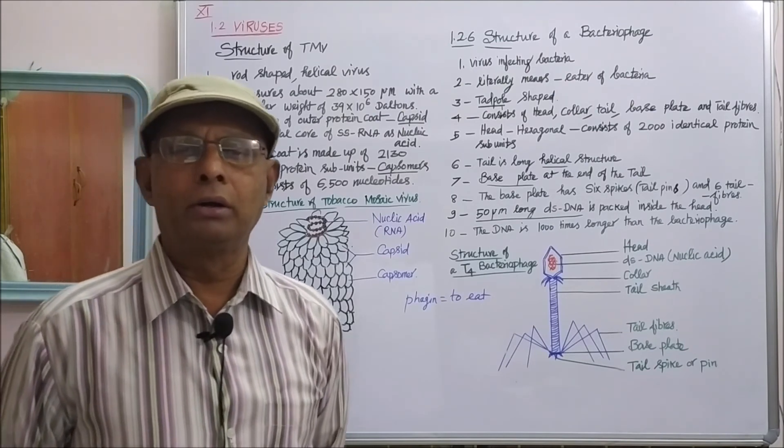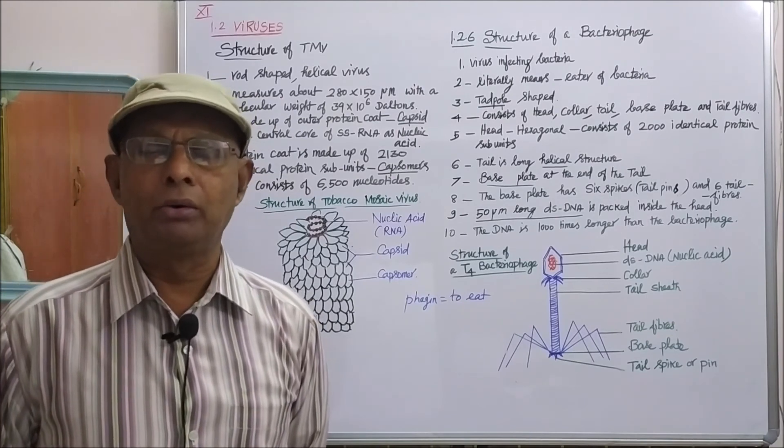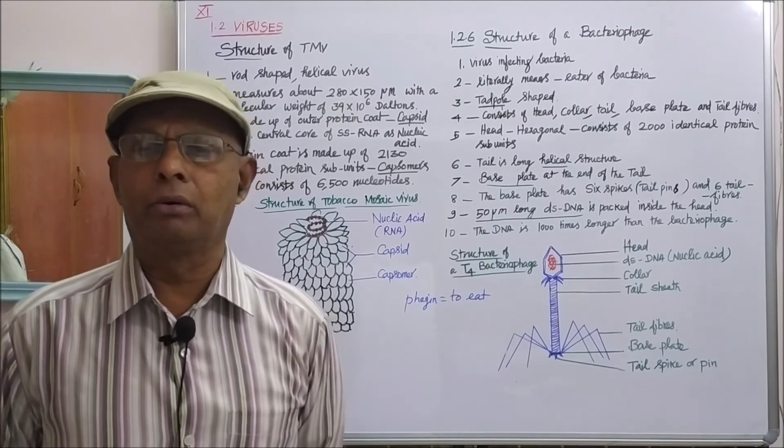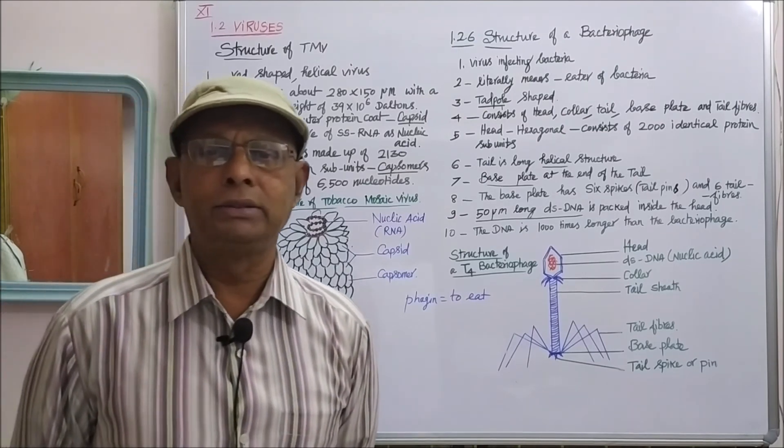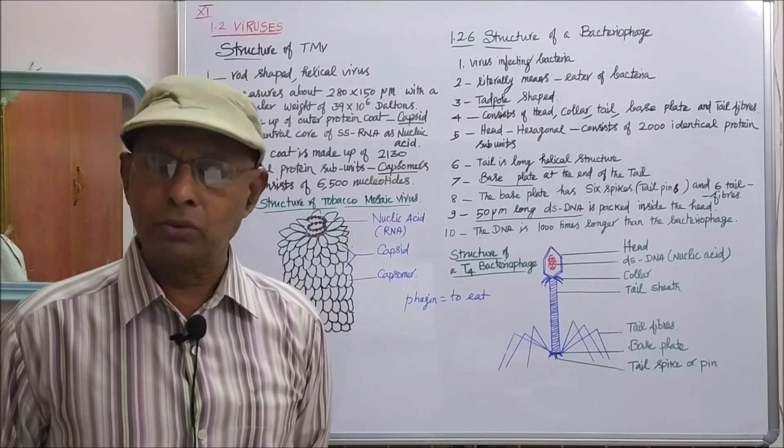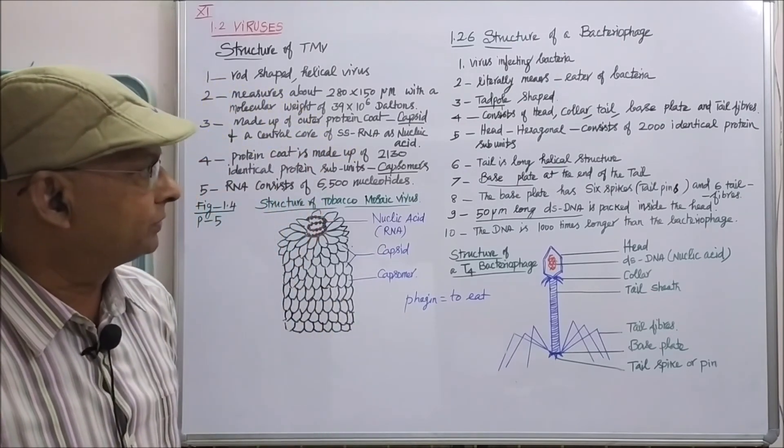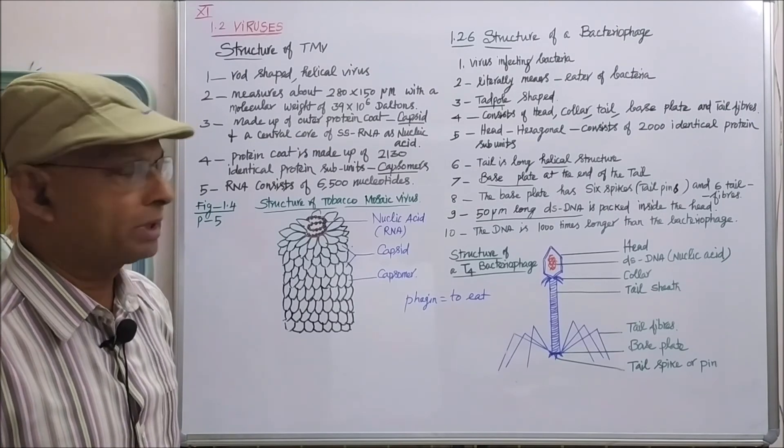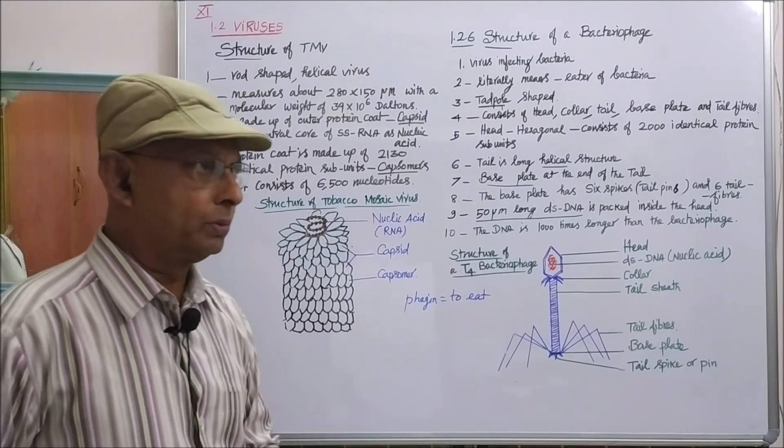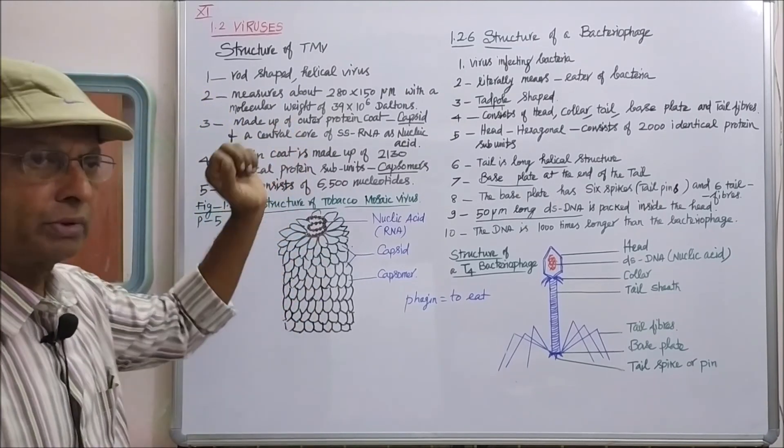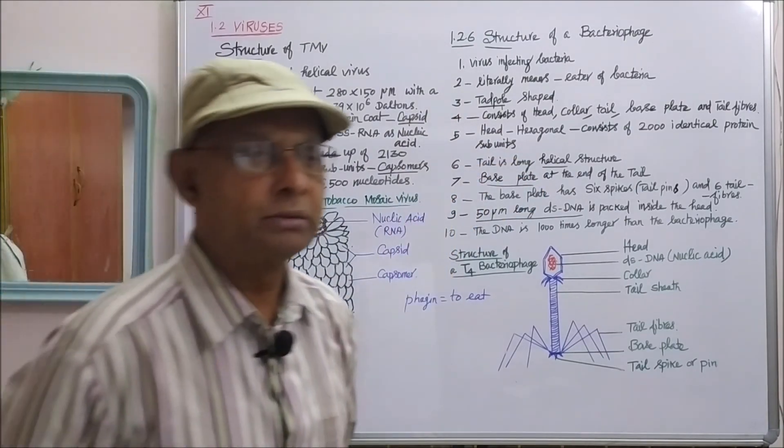A long double-stranded DNA molecule of about 50 micrometers is tightly packed inside the head. The DNA is about 10,000 times longer than the bacteriophage. This is all the information about the structure of the bacteriophage. Now we have seen the structure of the tobacco mosaic virus and also the structure of the bacteriophage. That's all.